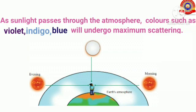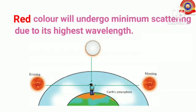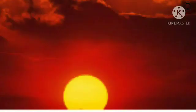As sunlight passes through the atmosphere, colors such as violet, indigo, and blue, having less wavelength, will undergo maximum scattering, so they cannot travel through a longer distance and spread in the atmosphere. Red color will undergo minimum scattering due to its highest wavelength and can travel through a longer distance. When light reaches the observer after traveling long distances, red color reaches the eye of the observer.